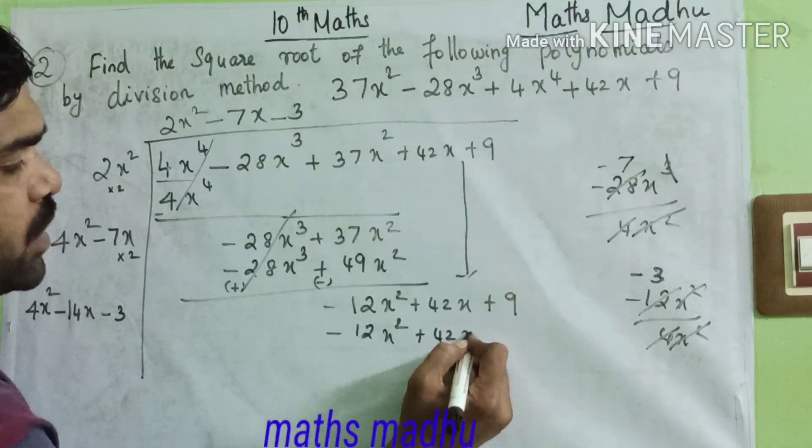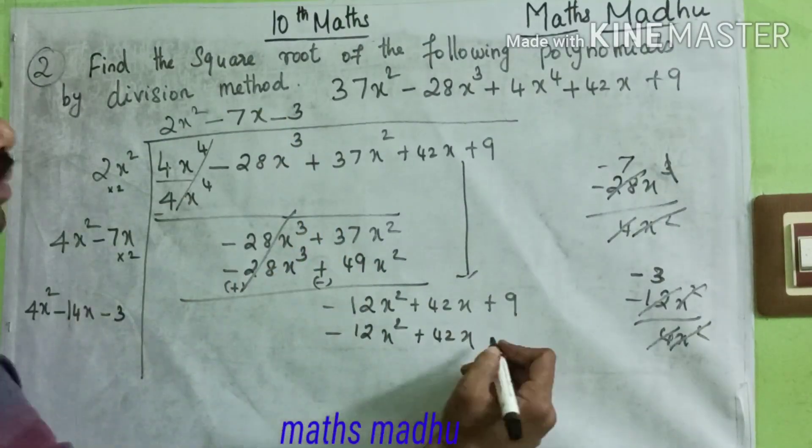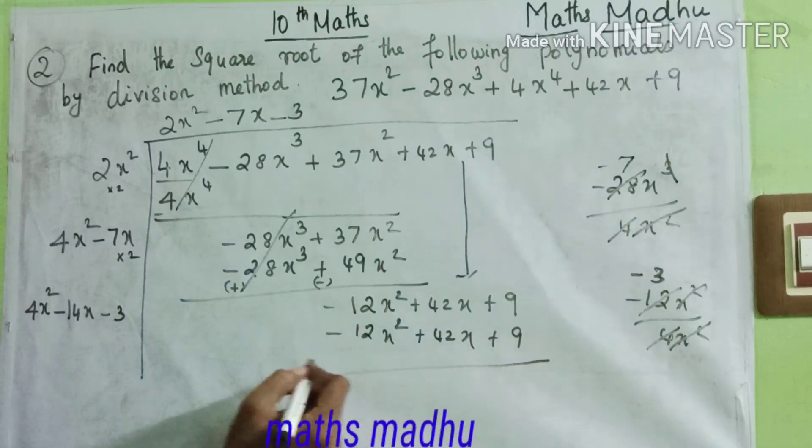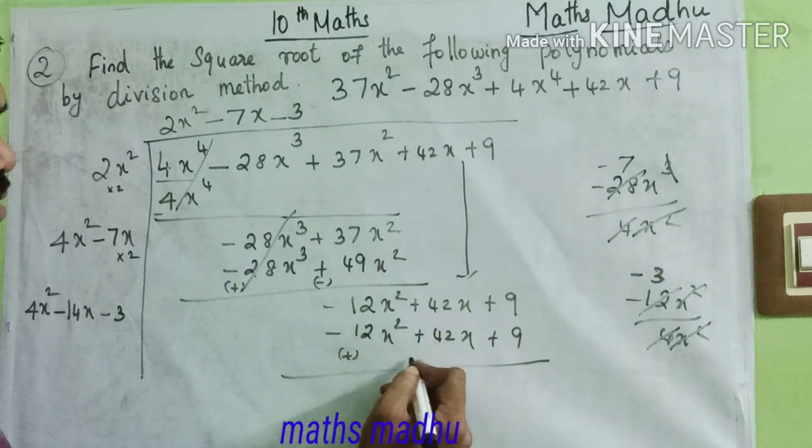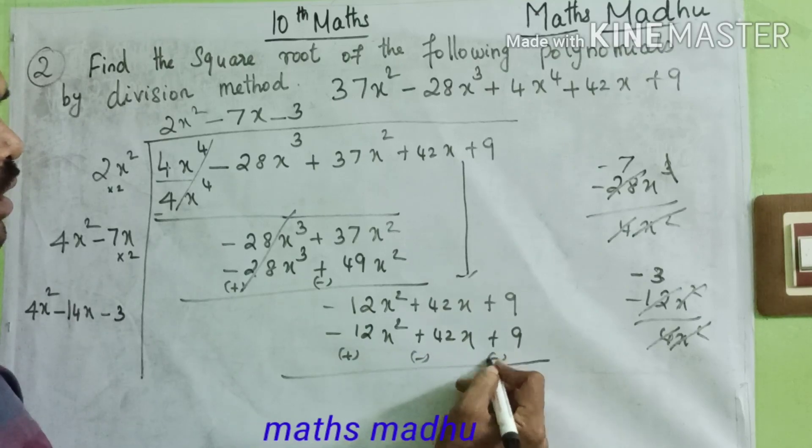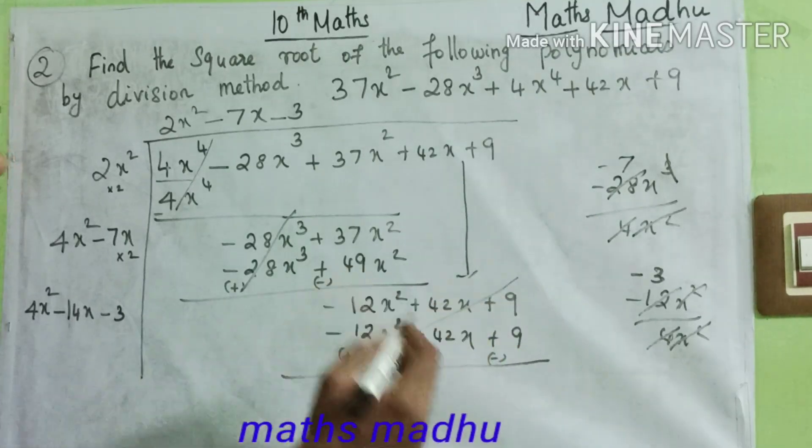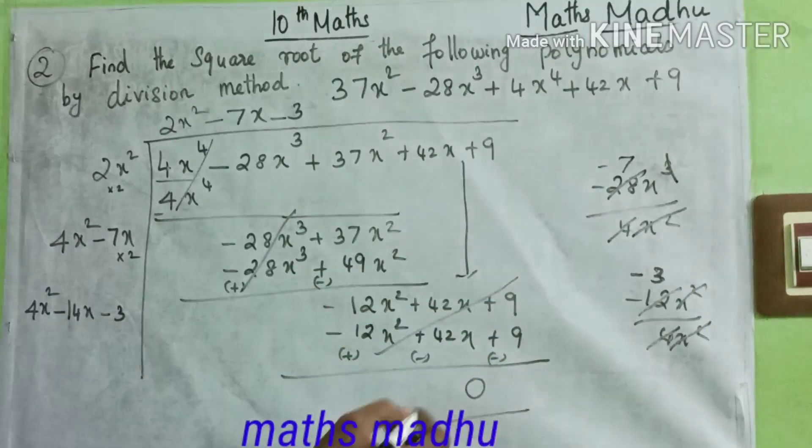So 3 into 14 hour with 42. So minus minus plus, so plus 42x. The minus minus plus, 3 into 3. We know about a similar thing from a similar gentleman. Over me, cancel.